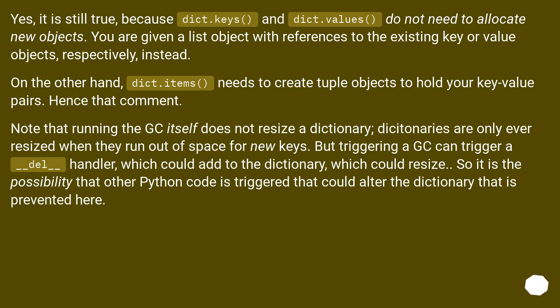Note that running the GC itself does not resize a dictionary. Dictionaries are only ever resized when they run out of space for new keys. But triggering a GC can trigger a __del__ handler, which could add to the dictionary, which could resize. So it is the possibility that other Python code is triggered that could alter the dictionary that is prevented here.